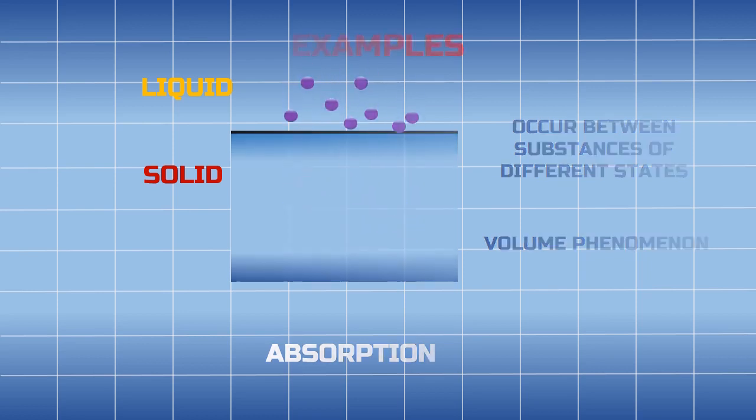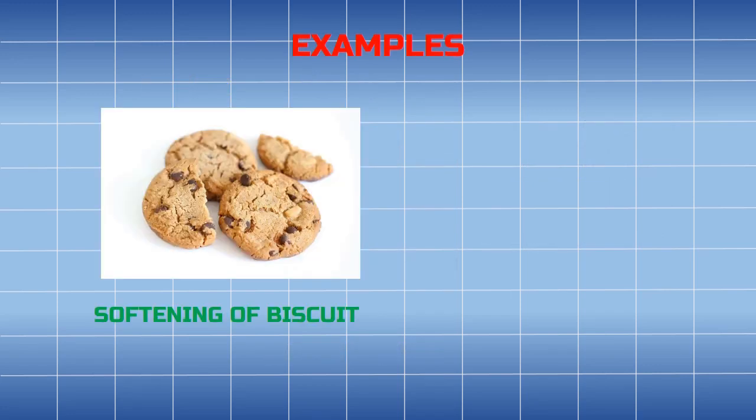Let's look at some examples of absorption. First is softening of a biscuit. If you take a biscuit and put it in open air, after some time the biscuit becomes soft or soggy because water is present in air. The biscuit absorbs the water from the air and stores it inside. If you touch the biscuit you will not feel the water, but it is actually absorbed inside the volume of the biscuit.